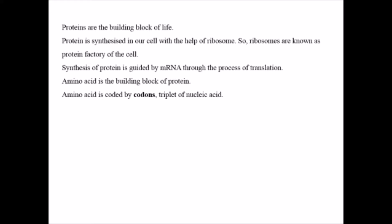Amino acids are coded by codons, which are triplets of nucleic acids. There are four nucleotides: adenine, guanine, cytosine, and thymidine. If the codon were a duplet rather than a triplet, we would have only 16 codons, but we need to code for 20 amino acids, so it must be a triplet. Each codon is specific for each amino acid. AUG codes for the initiation of translation, while UAG and UGA code for the termination. The reading frame without a termination codon is known as an open reading frame.